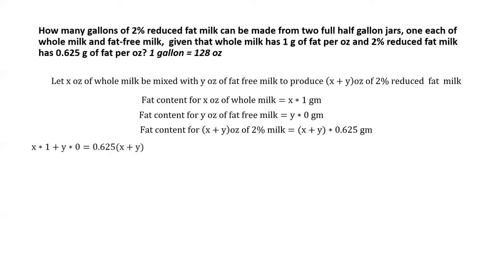We can equate the two: add up the fat content for X ounces of whole milk and Y ounces of fat-free milk, and that should equal the fat content of the mixture. The amount of fat must come from the individual constituents — in this case, only the whole milk contributes fat. So X grams of fat equals 0.625 times (X plus Y), assuming X and Y are in the right proportion to produce 2% fat milk.